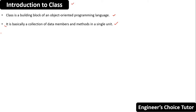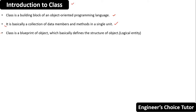You can also say that class is a logical entity or a blueprint of an object which basically defines the structure of the object. This definition is also 100% valid. Class is a blueprint of an object which basically defines the structure of the object.